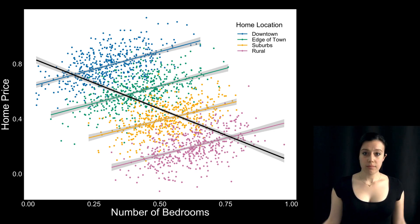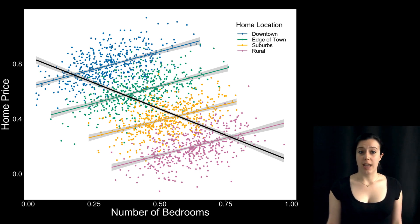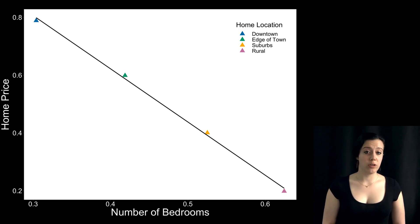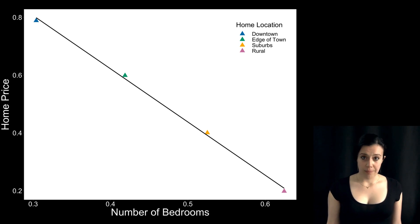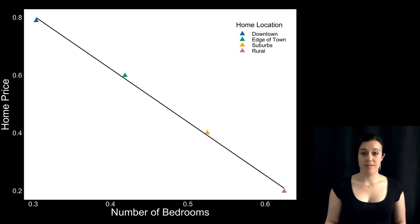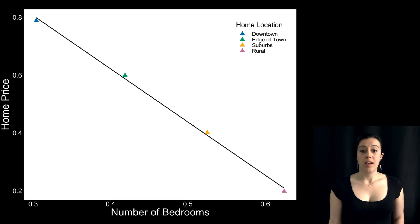So what on earth is going on here? When we look at the data together and ignore home type, thereby violating the independence assumption, we see a negative relationship. And aggregation doesn't help — if instead of plotting all those points we only plot four means, one per home type, we still see that puzzling negative association. The reason this is happening is that the four types of homes differ both in the number of bedrooms and in their price. Homes located downtown have a small number of bedrooms but they're expensive because they're in the city, whereas homes in the suburbs and rural areas have many more bedrooms but tend to be less expensive overall. But within each home type, homes with more bedrooms tend to be more expensive. Those massive rural homes with a billion bedrooms are super expensive.